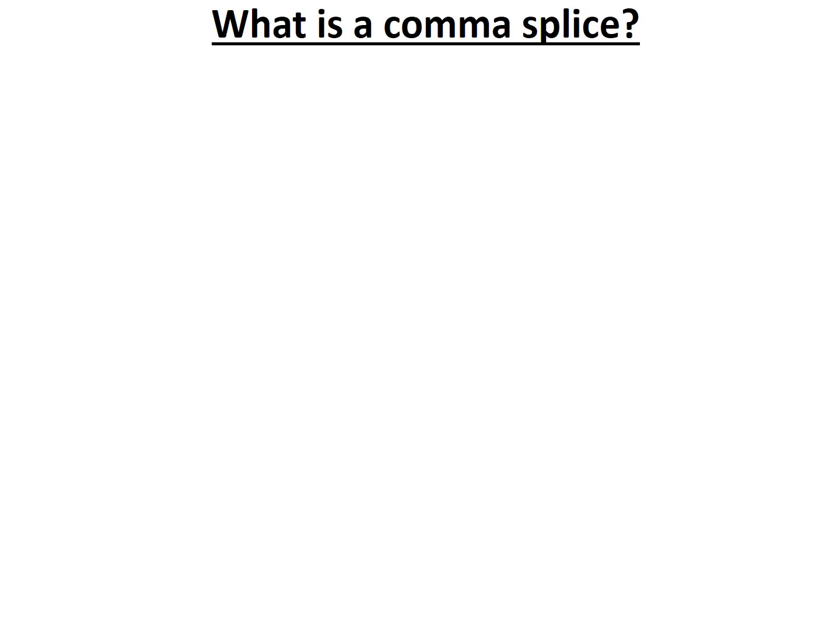So how is a comma splice actually made? This grammatical error can happen when we're looking at joining two independent clauses — statements that make sense on their own. Usually we need to use a conjunction or a semicolon to join these two independent clauses.